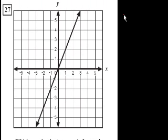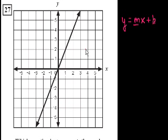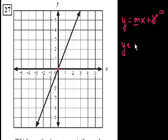If we said that this is the equation of a line, we said y is equal to mx plus b, where m is the slope and b is the y-intercept. When x is equal to 0, y is equal to 0. So the y-intercept is 0. We know this has the form y equals mx, where m is the slope.